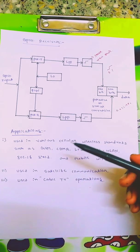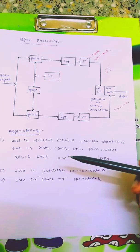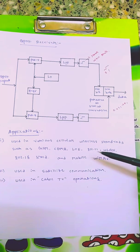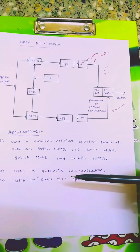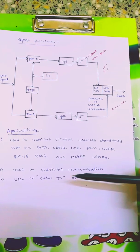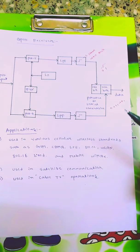Applications are used in various cellular wireless standards such as GSM, code division multiple access, LTE, 802.11 that is Wi-Fi wireless LAN, 802.16 fixed Wi-Fi and mobile or WiMAX applications. It is also used in satellite communication and TV cable operations.